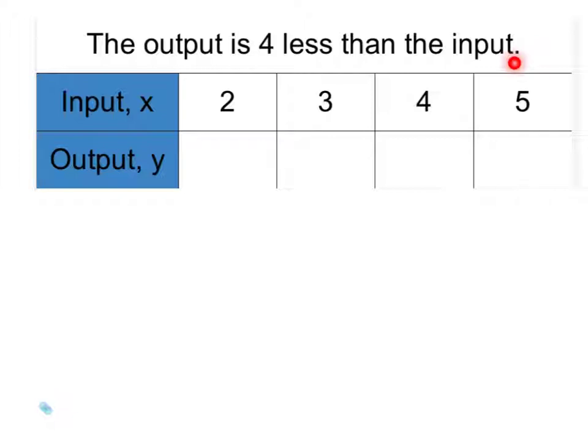Now in order to solve this, we're going to need to come up with an equation so we can apply it to find out what our outputs are. So looking at the statement, it says the output—so I'm going to use the variable y for output—is 4 less than the input. x will be my input, and 4 less than that will be minus 4.